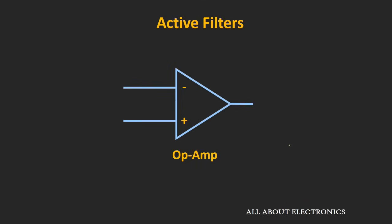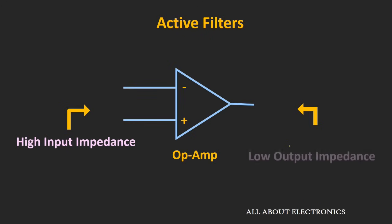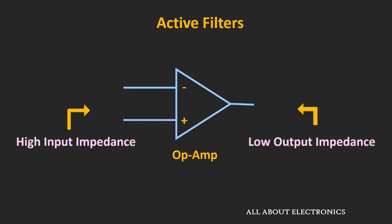The main advantage of op-amp is it has a very high input impedance and very low output impedance. Because of these characteristics, we can use op-amp as a buffer to isolate the load from the filter circuitry, or we can use it to isolate the different stages of the filter. So now let's see how we can use this op-amp as a buffer.